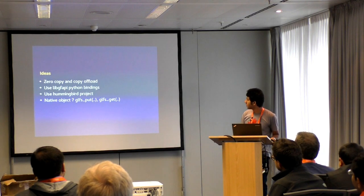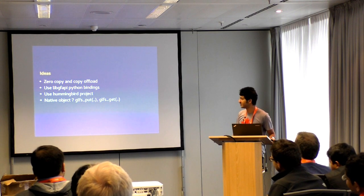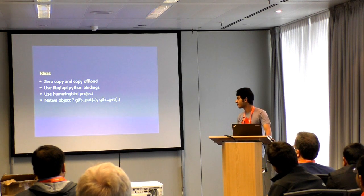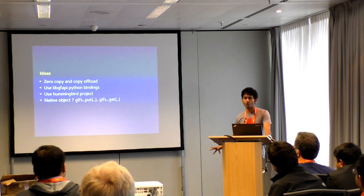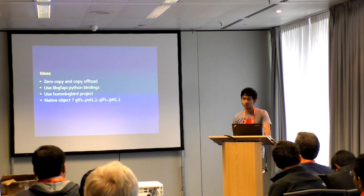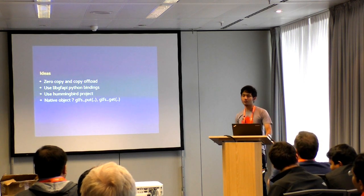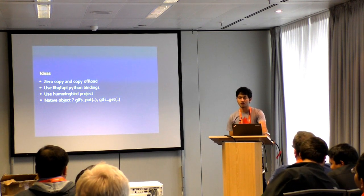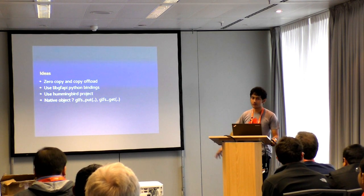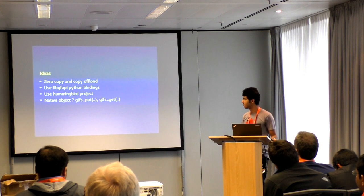Some future ideas: zero copy — the copy request can be offloaded to the brick side. Instead of FUSE we could use Python bindings. Swift has been rewritten in Go for performance reasons and Rackspace has seen huge improvements, so we could use that — Kaushal already has Go bindings for libgfapi. The ultimate goal would be native object support inside Gluster, something like GLFS_put and GLFS_get where you give the name, data, and metadata and it executes in a single call — either as a new fop or using the compound fop framework internally.